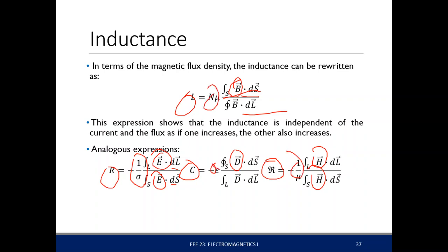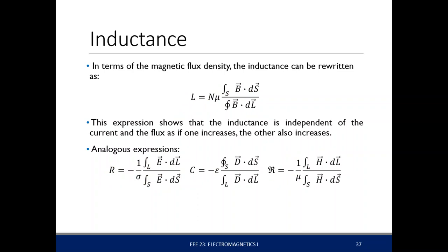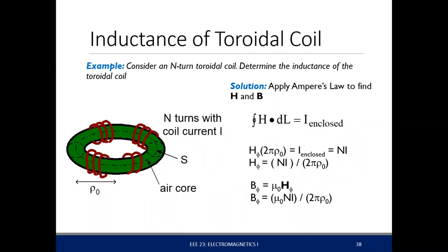The inductor, resistor, capacitor, and reluctance all have the same form: the ratio of two integrals. For reluctance and resistance it's dl over ds scaled by field intensities; for inductance and capacitance it's flux densities with ds over dl. All are scaled by some material constant. These are all analogous terms — you've already encountered this in the form of the electric field.